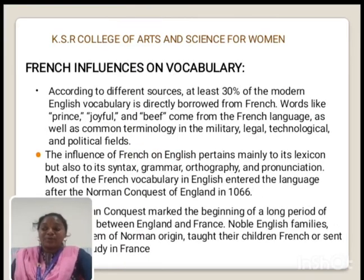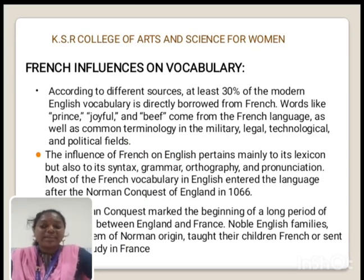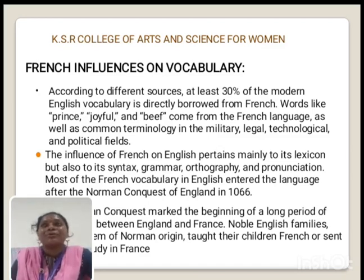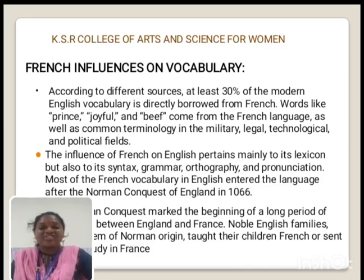Greek is one of the very important influences. Most of the Greek words have come into English either through Latin or French. That is very important. For example, the word 'Angel' — Angel is an English word from the Anglo-Saxon period. This word is also derived from the Greek, where the spelling is E-N-G-E-L, and so Angel evolved from that.